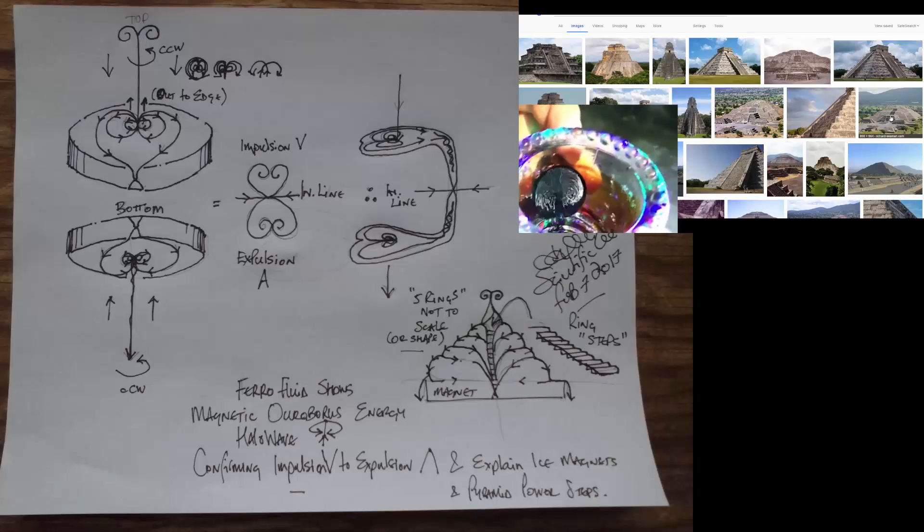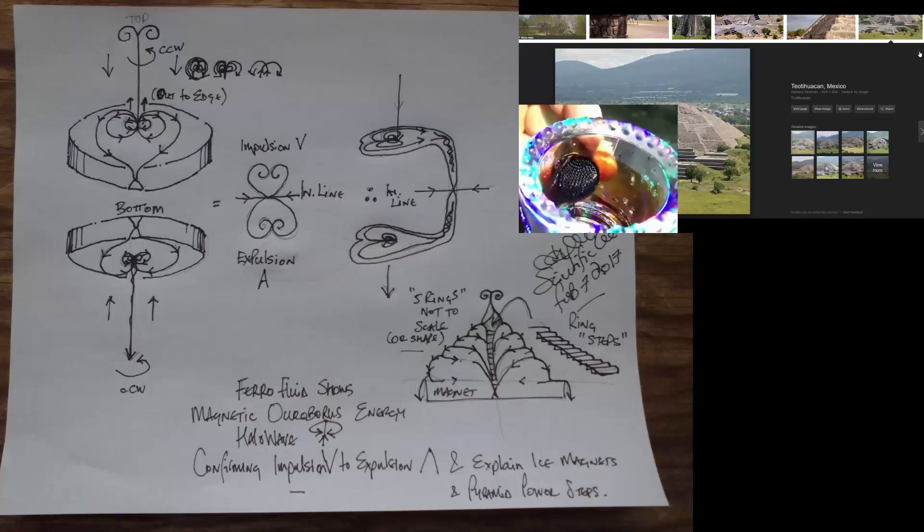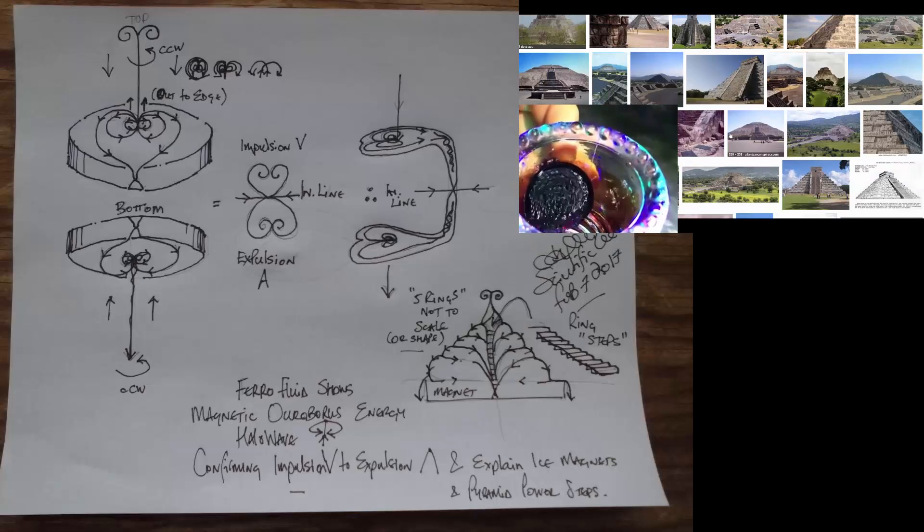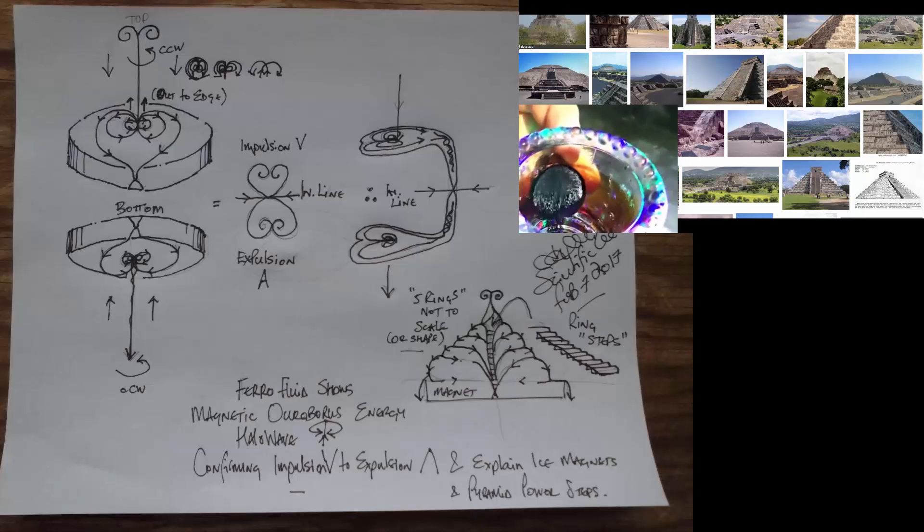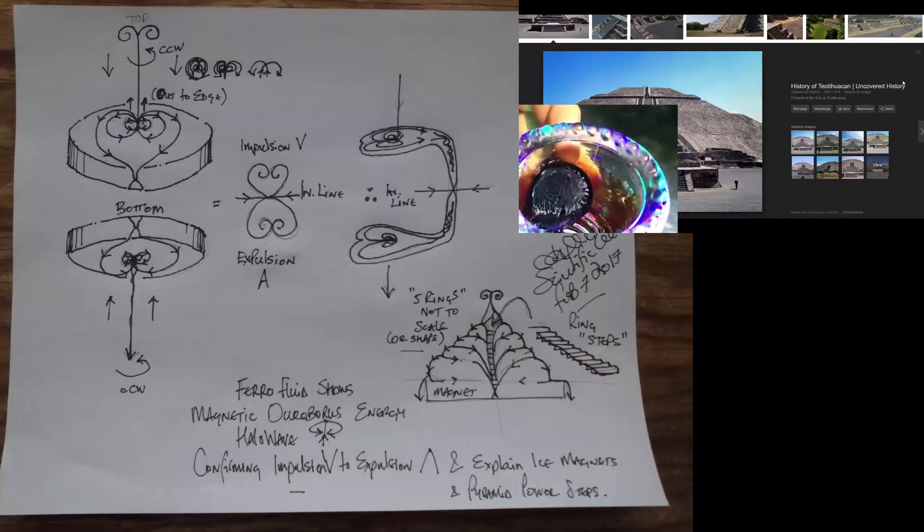An earlier video showing my halo wave and pyramids shows the halo wave in the center. I've redrawn it and shown what the electromagnetic field does as it goes around a magnet, because it must cross